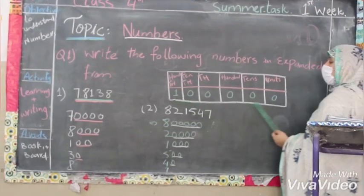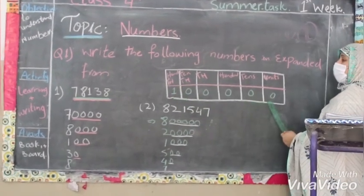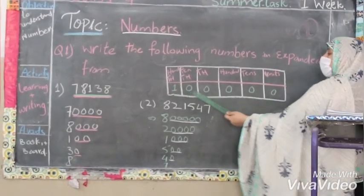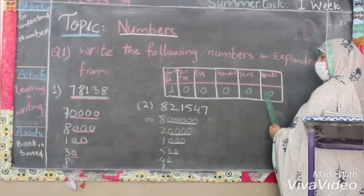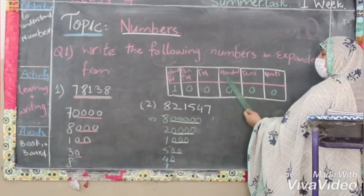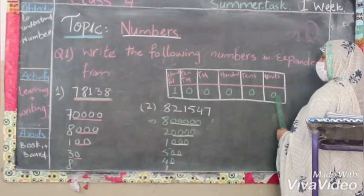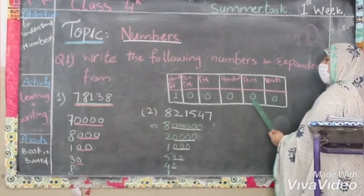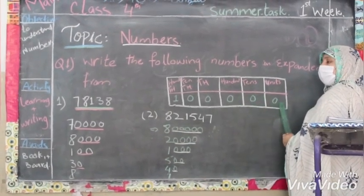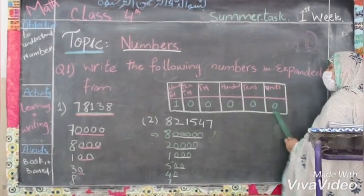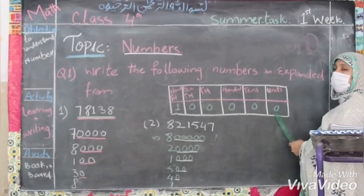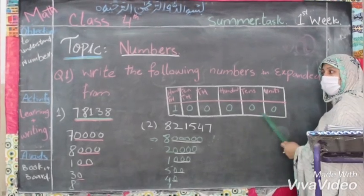In hundred thousands we have six digits. In ten thousands we have five digits. In hundreds we have three digits. In tens we have two digits. And in units, you know, we have only one digit.